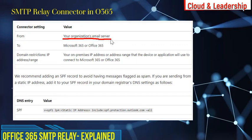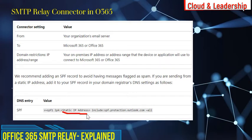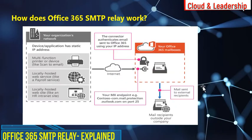When you click on a new connector, you will get an option for your organization's email server to Microsoft 365. For domain restriction, you can enter the IP address range from where you are going to send email, or you can choose the option to relay email using certificate-based authentication. We recommend adding an SPF record to avoid messages being flagged as spam — you can enter a static IP address here.